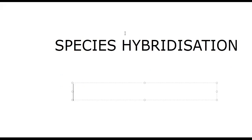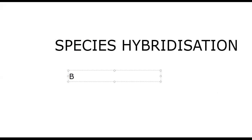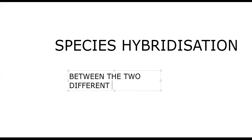For example, Panthera tigris (tiger) and Panthera leo (lion) both belong to the genus Panthera. Sometimes breeding is possible between them, producing a Liger.